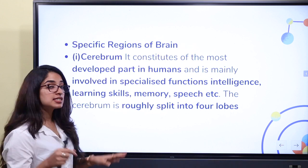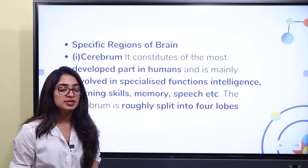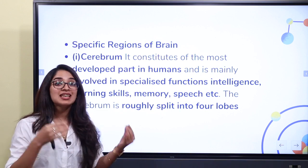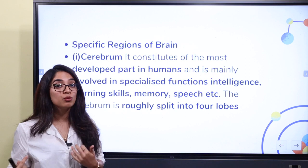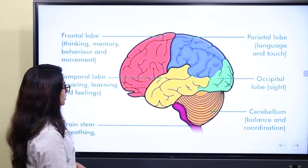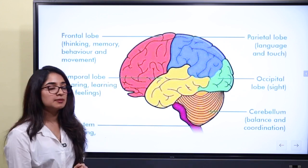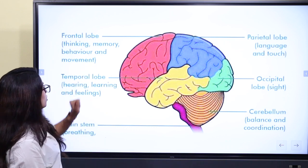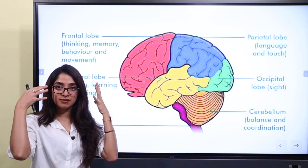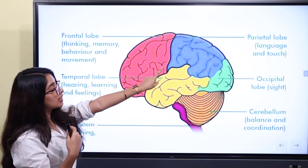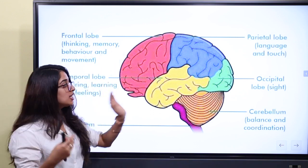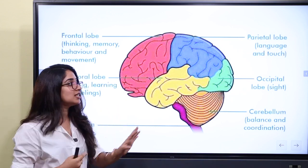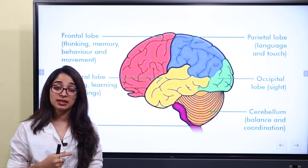The cerebrum is roughly split into four lobes: the parietal lobe, occipital lobe, frontal lobe, and temporal lobe. The frontal lobe is at the front, the temporal lobe is on the side, the parietal lobe is in the middle portion, and the occipital lobe is at the back.